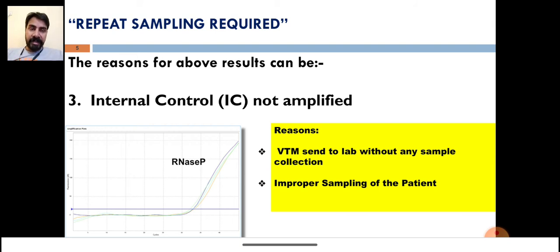If internal control is not amplified, then the labs are not able to give your result as positive or negative. What are the reasons IC is not amplified? It might be possible that improper sampling of the patient was done by some unprofessional technical staff who have no idea how to collect the sample.